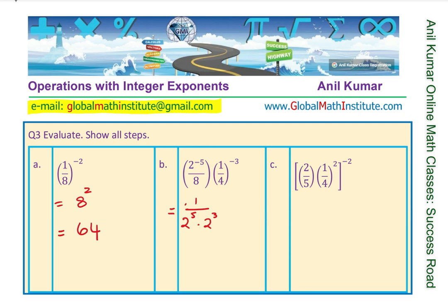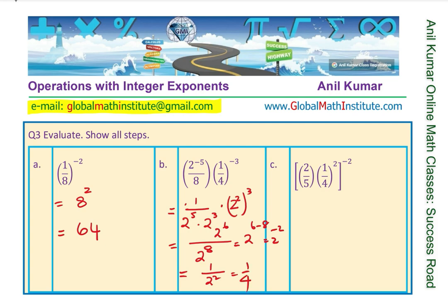And 4 can be written as 2 squared, so 1 over 4 to the power of minus 3 becomes 2 squared to the power of 3. In the denominator we have 2 to the power of 5 plus 3, which is 8. In the numerator we have 2 to the power of 2 to the power of 3, which is 2 to the power of 6. So we have 2 to the power of 6 minus 8, which is 2 to the power of minus 2, or 1 over 2 squared, which is 1 over 4. You can do this question in many different ways, but the result will be 1 over 4.